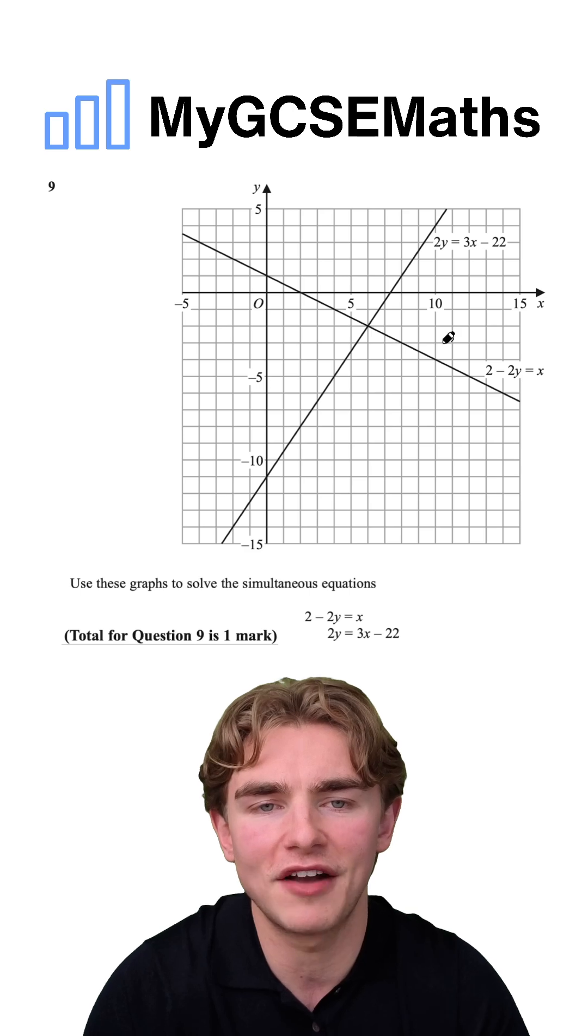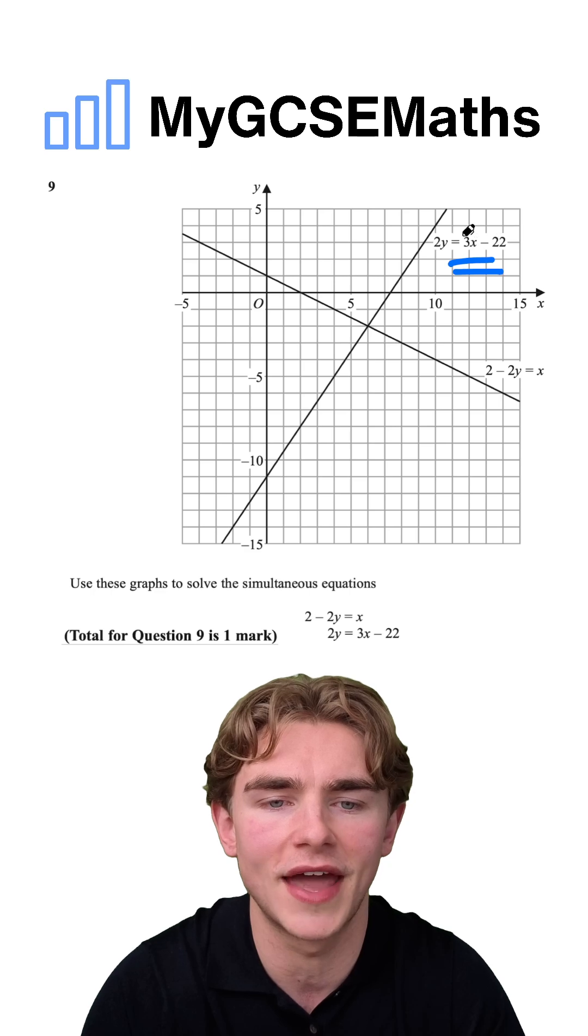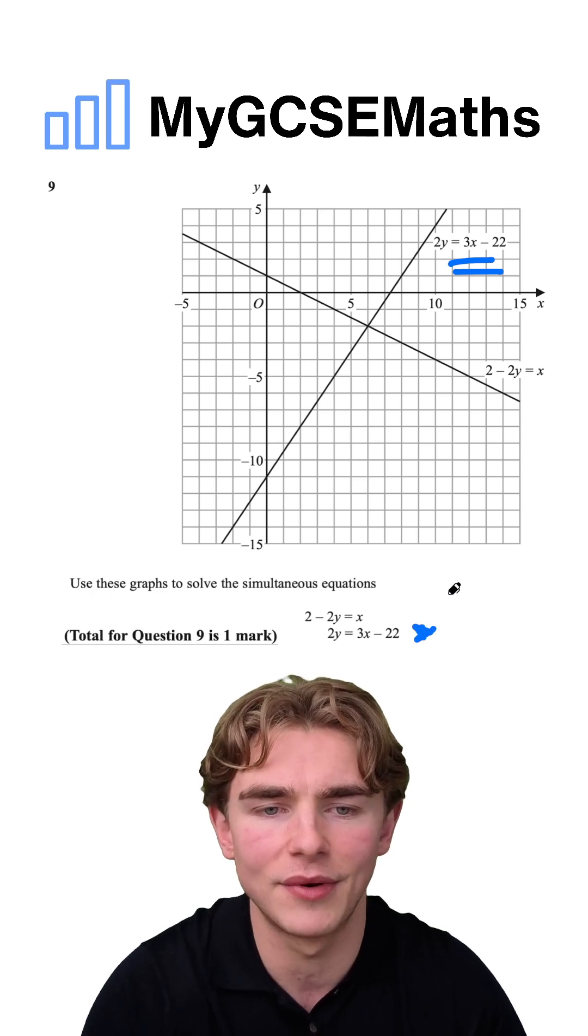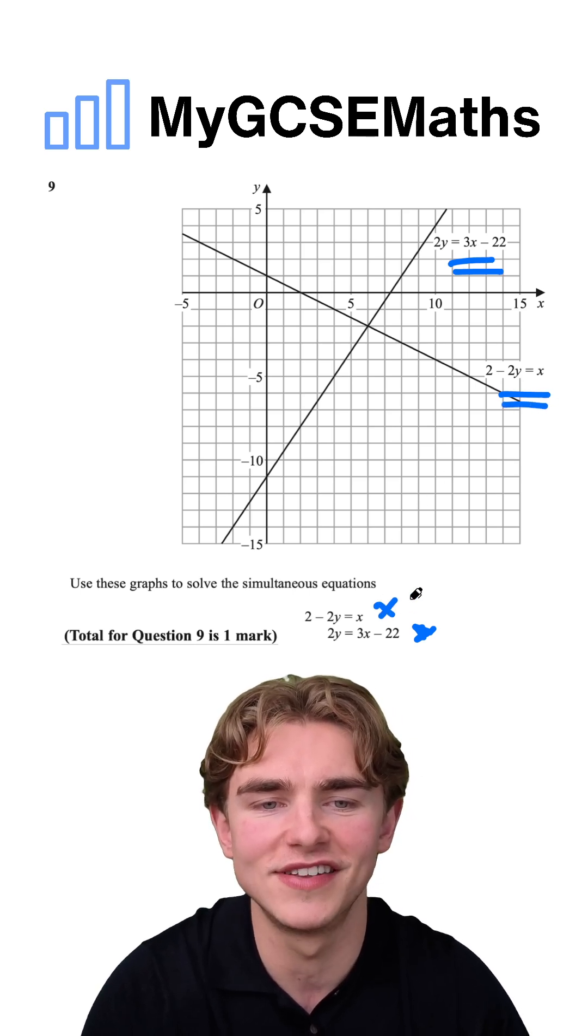We can see that we've been given a graph up here and we've got two lines on it. We have the line 2y equals 3x minus 22, this line down here, and we have the line 2 minus 2y is equal to x, which is this line here.